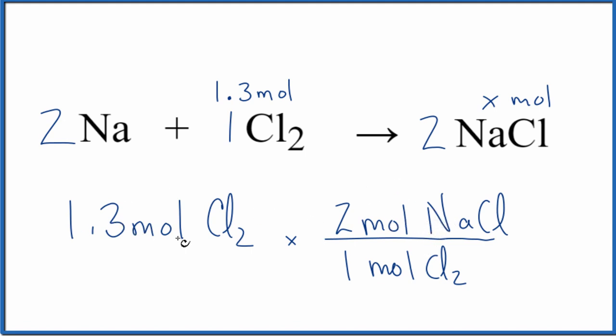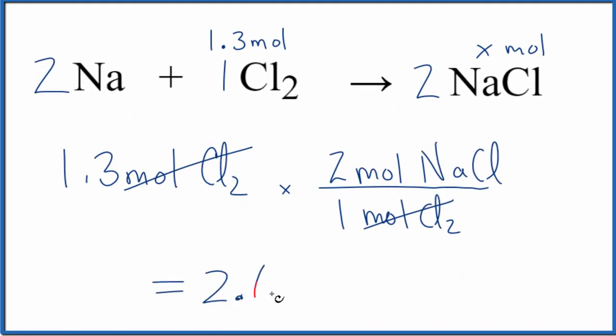So we have chlorine on the top here, and we have chlorine on the bottom. So that's why we have the chlorine down here, because when we multiply and divide, this will cancel out. We're left with moles of NaCl. That's what we're looking for. So 1.3 times 2 moles of NaCl, that gives us 2.6 moles of NaCl. And that's what we found with the other two methods.